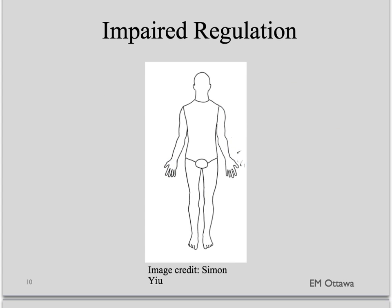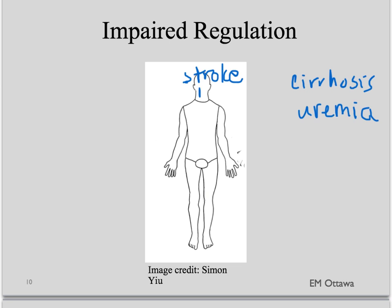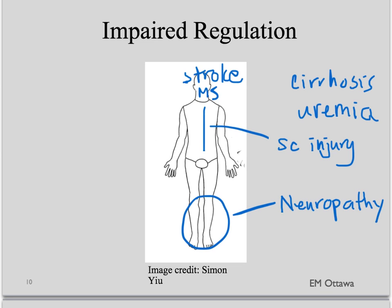Third, impaired thermostat or impaired thermoregulation. In the body, it can be either central or peripheral. The central causes include metabolic causes such as cirrhosis and uremia. It can also include things like stroke or MS in the central nervous system. Peripheral causes include spinal cord injury and peripheral neuropathy. These all cause the body to have impaired thermoregulation.